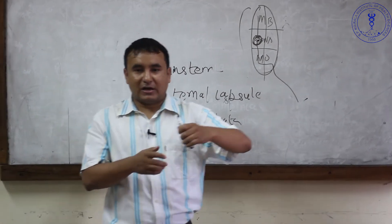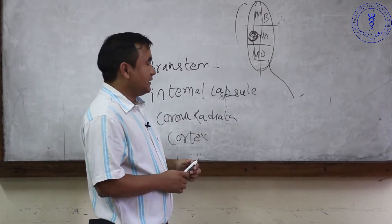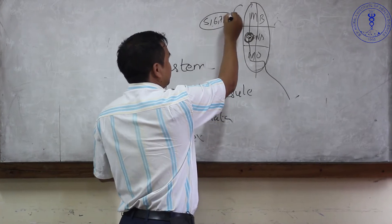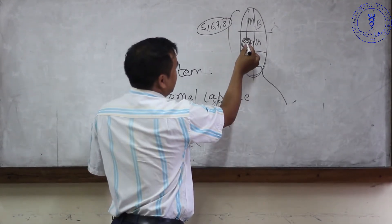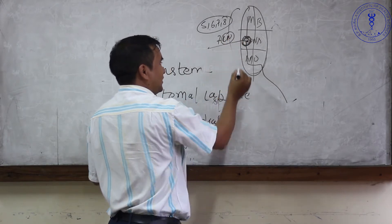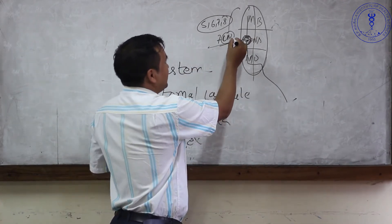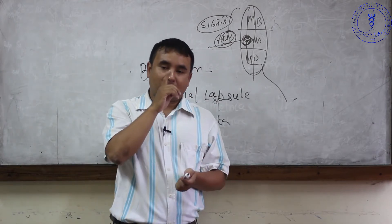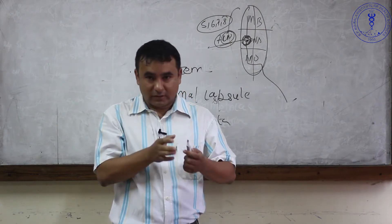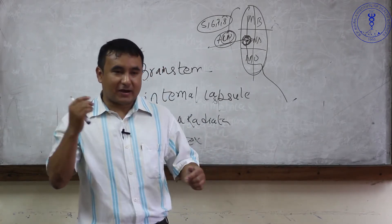If there is a problem on the right side of the pons, the patient will have hemiparesis on the left side of the body. Additionally, cranial nerves 5, 6, 7, and 8 arise from the pons. For example, with a right-sided pons lesion, the right 7th cranial nerve will be affected, causing right facial nerve palsy along with left-sided body weakness.